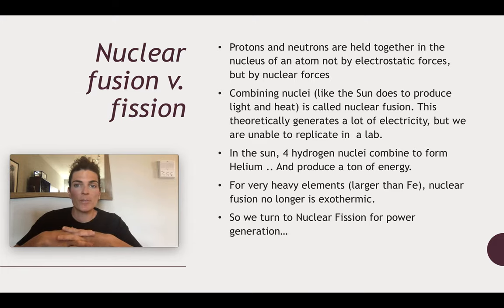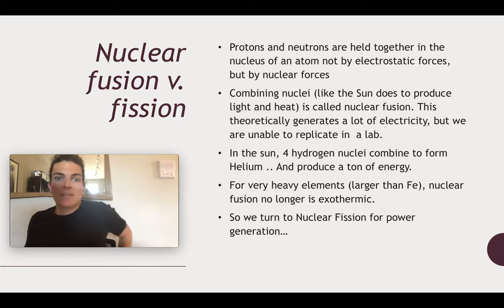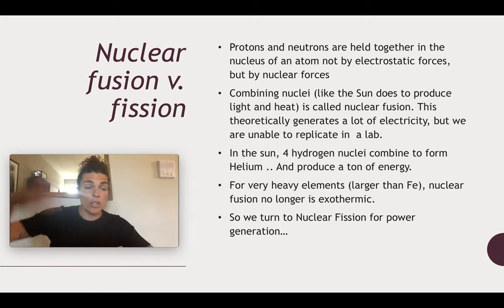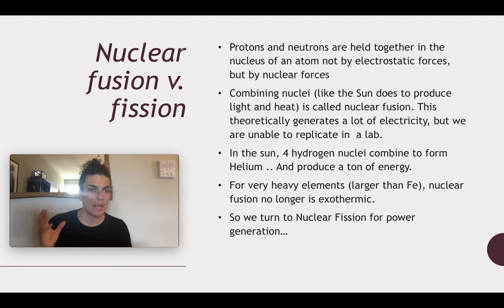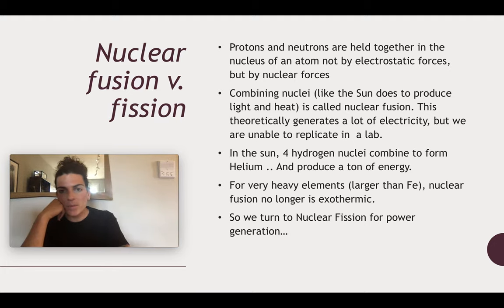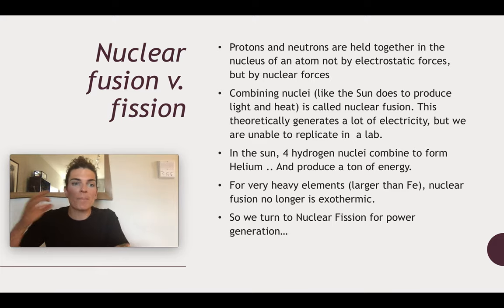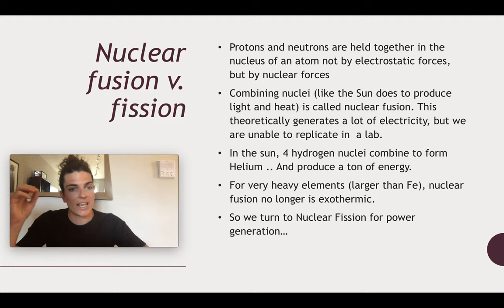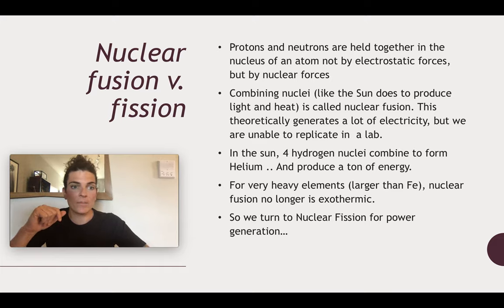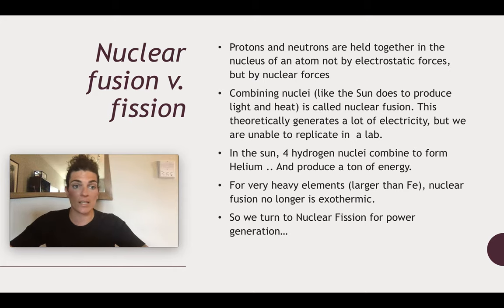Nuclear fusion is what the sun does — how the sun produces light and heat energy. This theoretically generates a ton of electricity, and in fact it does — look at the sun, it's bright, and there's a lot of energy being produced. So theoretically, if you could figure out a way to do this on Earth, you could generate a lot of electricity. In the sun, four hydrogen nuclei combine together to produce helium in a process of hydrogen fusion, and this produces a ton of energy which gives us life on Earth.